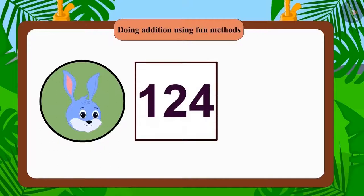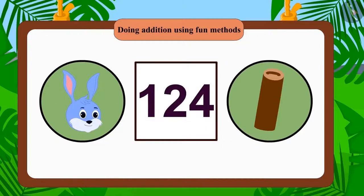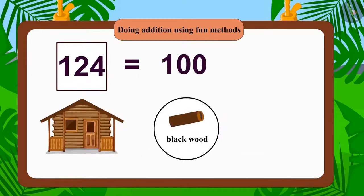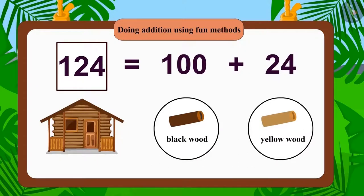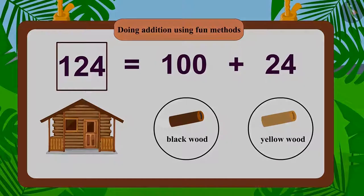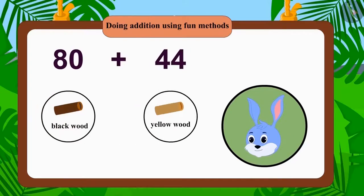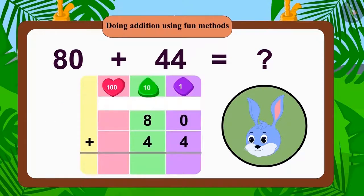Bunny built his house with 124 pieces of wood. He built his house using 100 pieces of black wood and 24 pieces of yellow wood. If Bunny used 80 black wood and 44 yellow wood, would Bunny still have used only 124 wood? Children, you can find the answer to this question by using the process of adding 2 digit numbers.